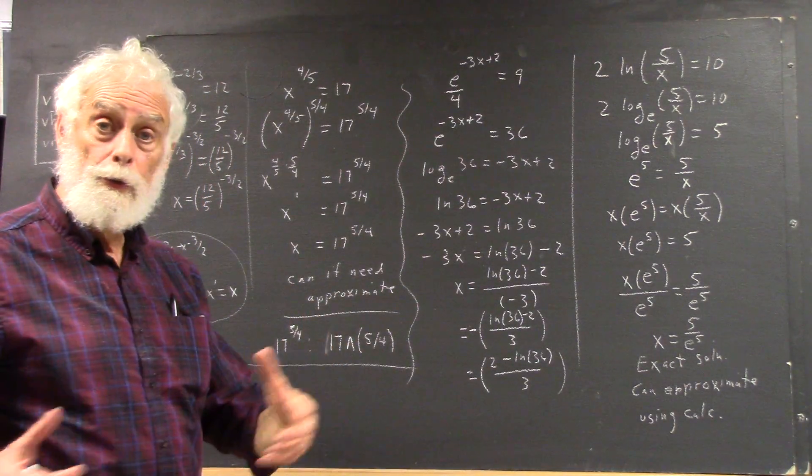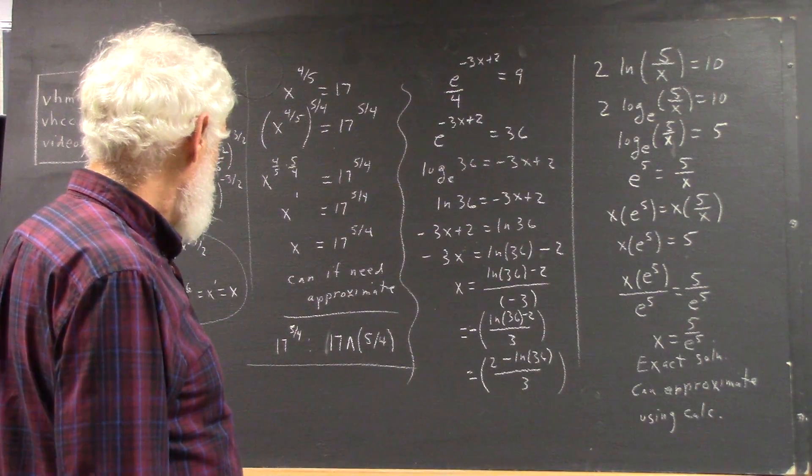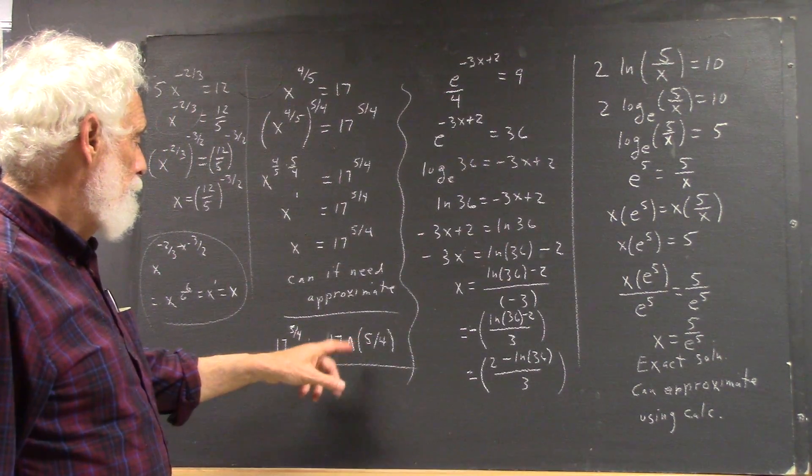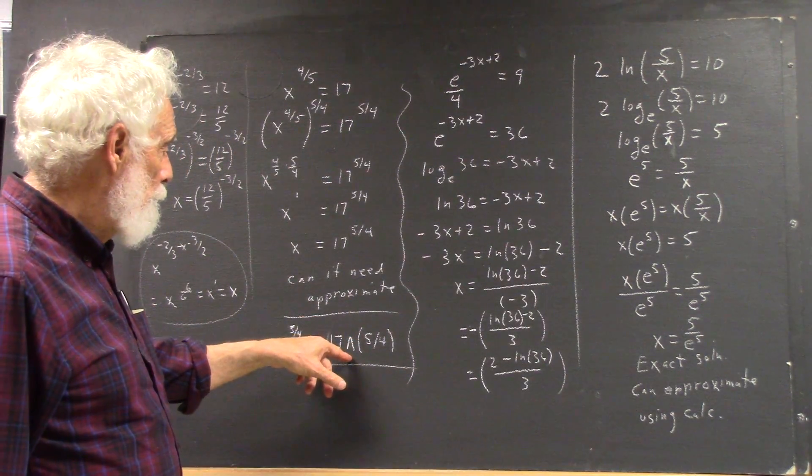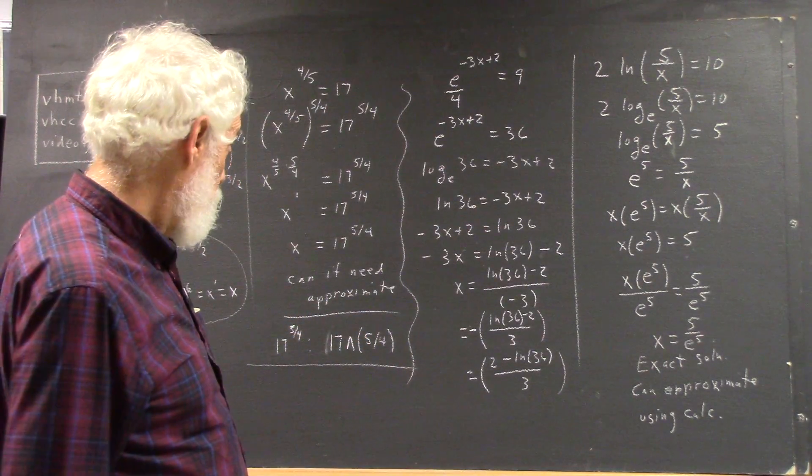That's what we use for the exponent. So you could calculate 17 raised to the—and you want to put parentheses around 5/4.